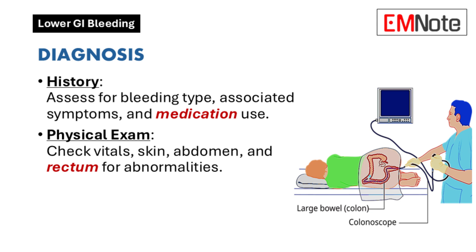Unintended weight loss or changes in bowel habits may suggest malignancy, while a history of aortic graft placement raises suspicion for an aortoenteric fistula. The physical examination should assess vital signs for evidence of hemodynamic instability, including hypotension, tachycardia, or reduced pulse pressure.